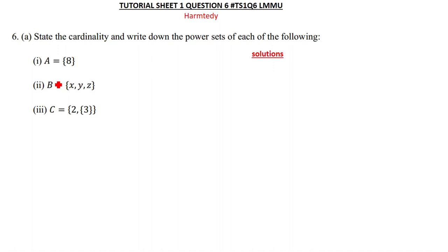The first set is A = {8}. The cardinality of this set is one. Cardinality is simply the number of elements in a given set. The power set is a set that contains all the subsets of a given set, so the cardinality of the power set is just the number of subsets a given set has.